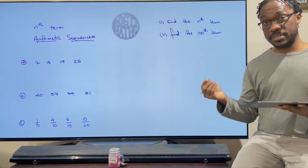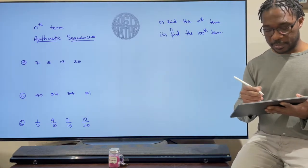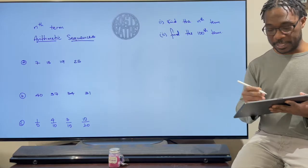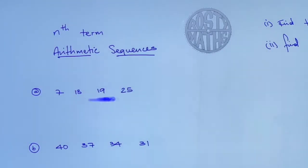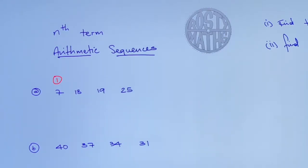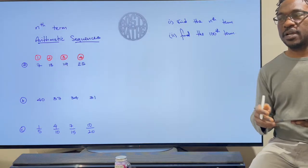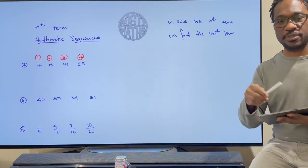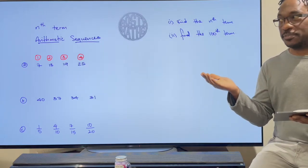Let's talk about sequences and some of the terminology I'll be using. I have a sequence here and these are called terms — that's the first term, second, third, and fourth. I'll put that at the top because I'll be coming back to it: term number one, term number two, three, and four.